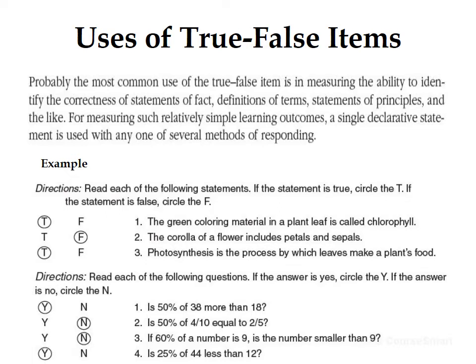Uses of true-false items: The most common use is measuring the ability to identify the correctness of statements of facts, definitions of terms, statements of principles, and the like. A single declarative statement is used with several methods of responding. For example: 'Read each statement. If the statement is true, circle T; if false, circle F.' Or: 'If the answer is yes, circle Y; if no, circle N.'